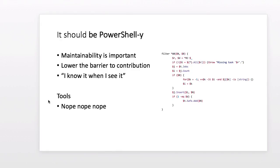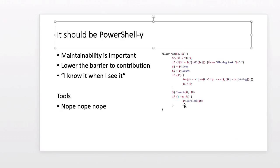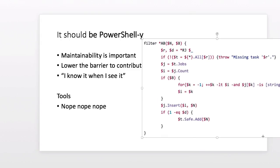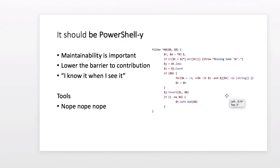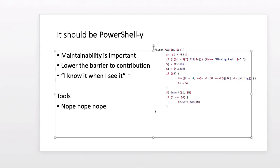From a contributor's perspective, your code should also be PowerShell-y. This is important for maintainability and lowering barriers to contribution. I have a fun example — code from one of my favorite modules for running builds that works really well from a user's perspective, but if you wanted to contribute to it, there are a lot of folks who would be turned away and wouldn't know where to start, including myself. It's kind of a Supreme Court thing — you'll know it's PowerShell-y if you see it. There aren't really any tools for this; it comes with experience working with PowerShell.